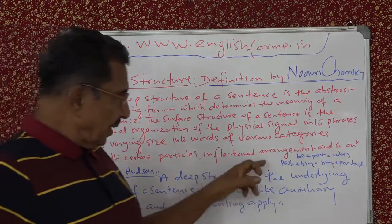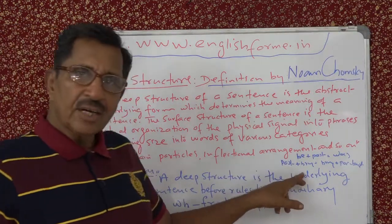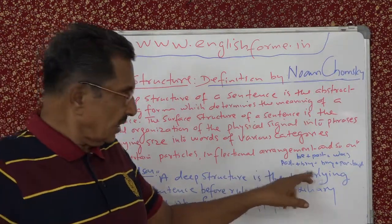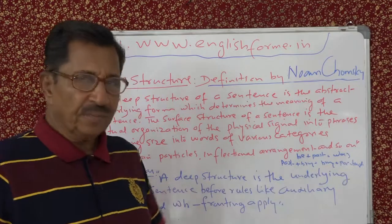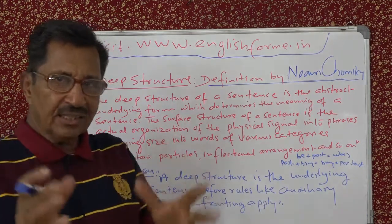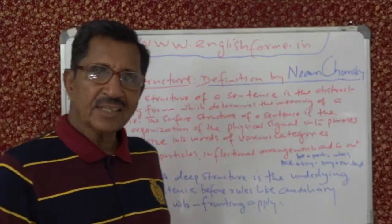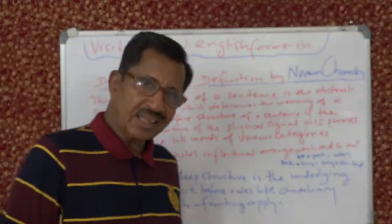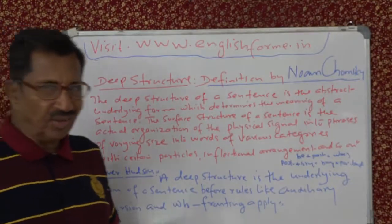So the level of 'past + bring' is the deep structure. Then with inflection — the change in form — that becomes the surface structure. That is what we saw yesterday.